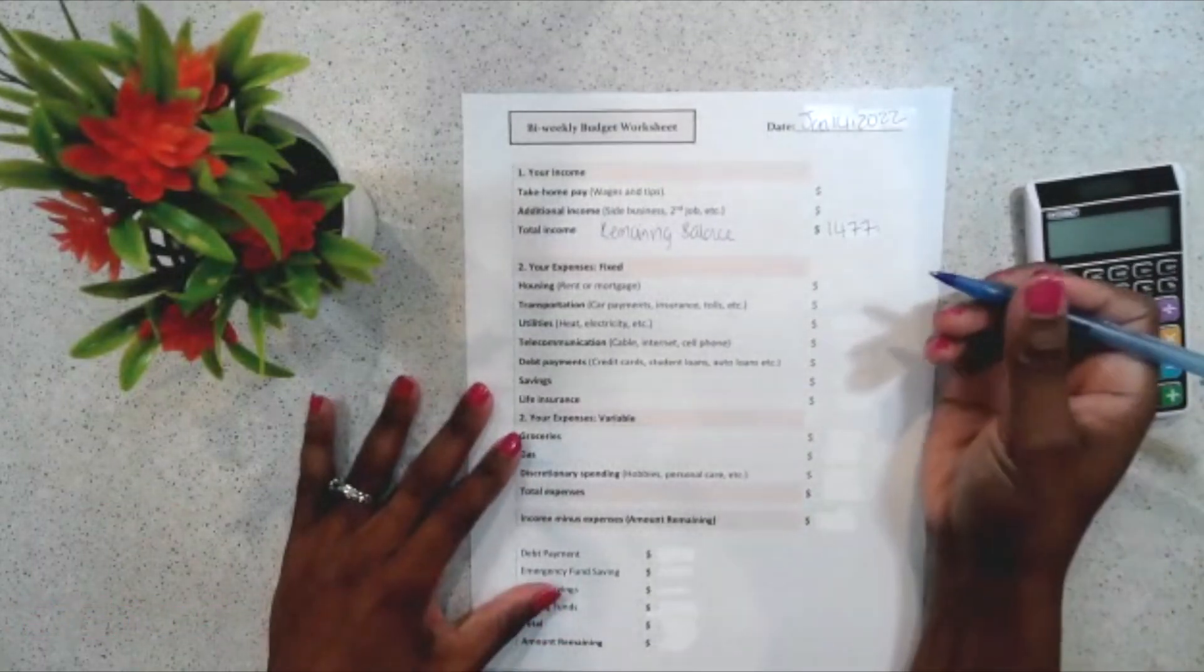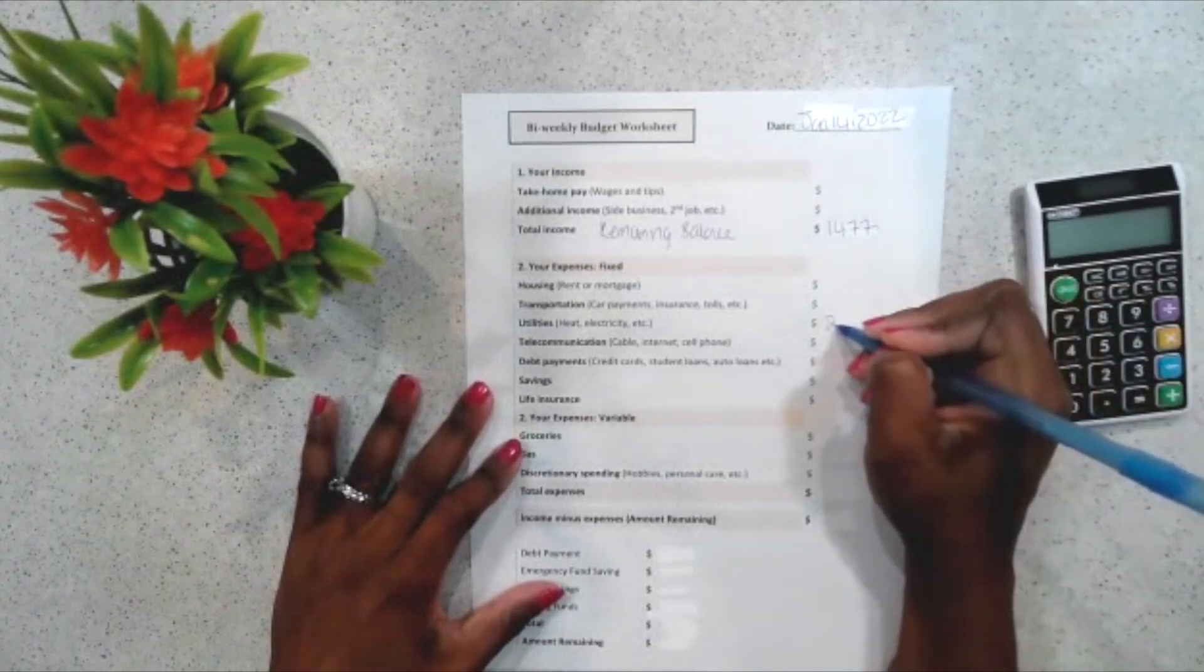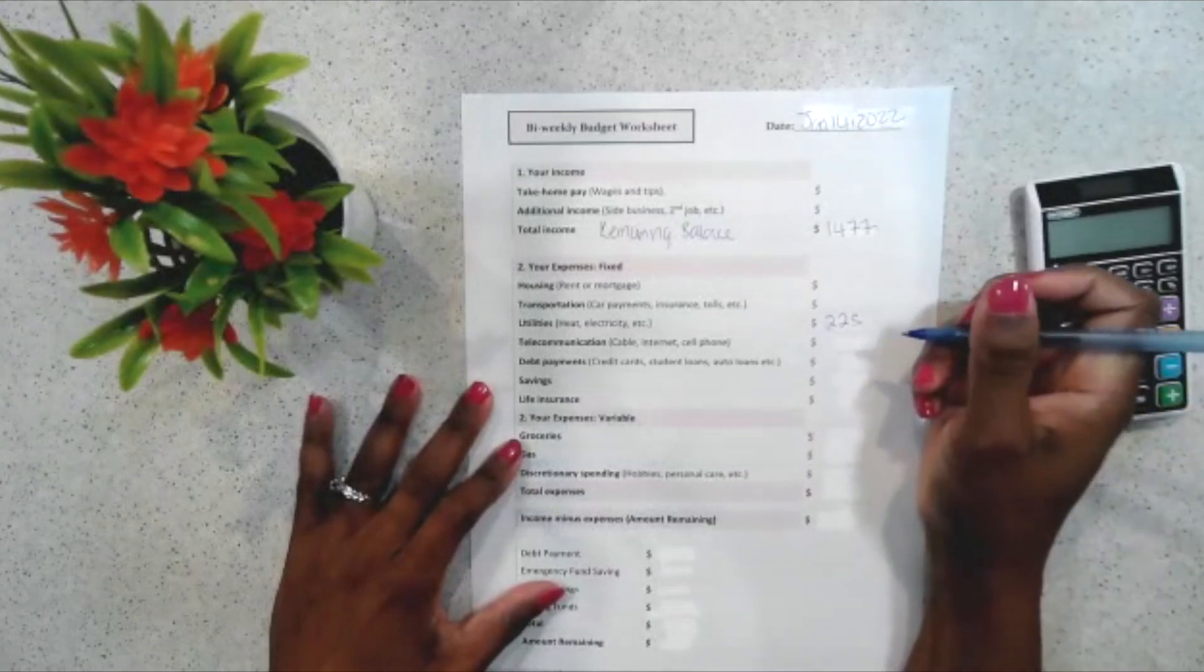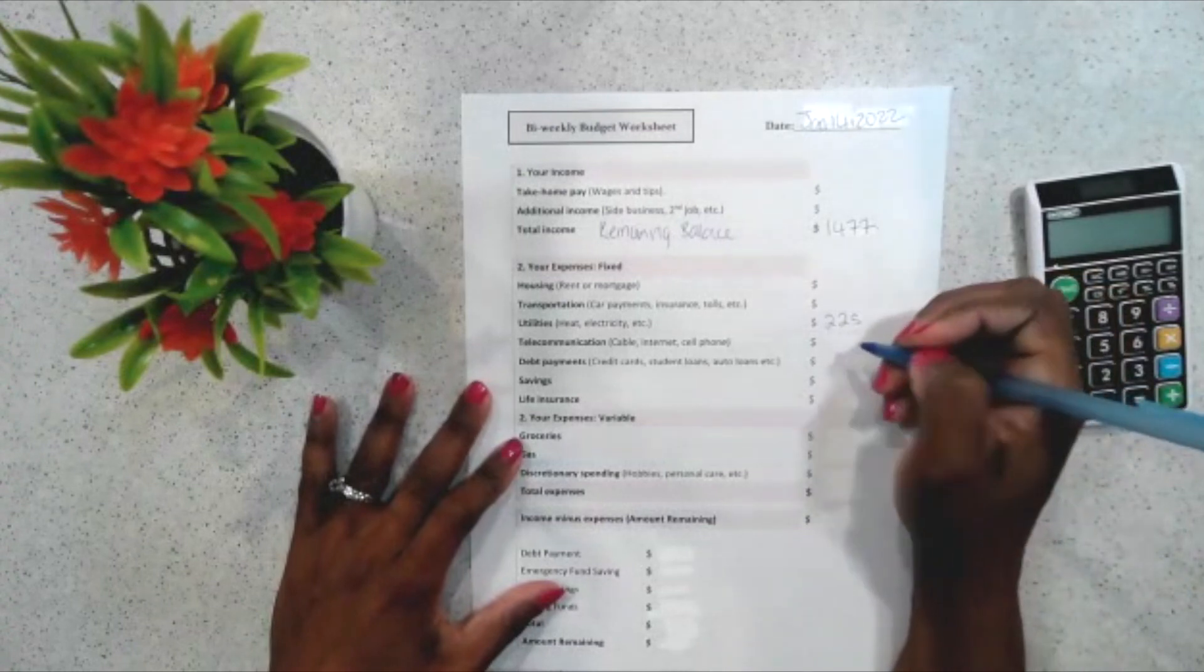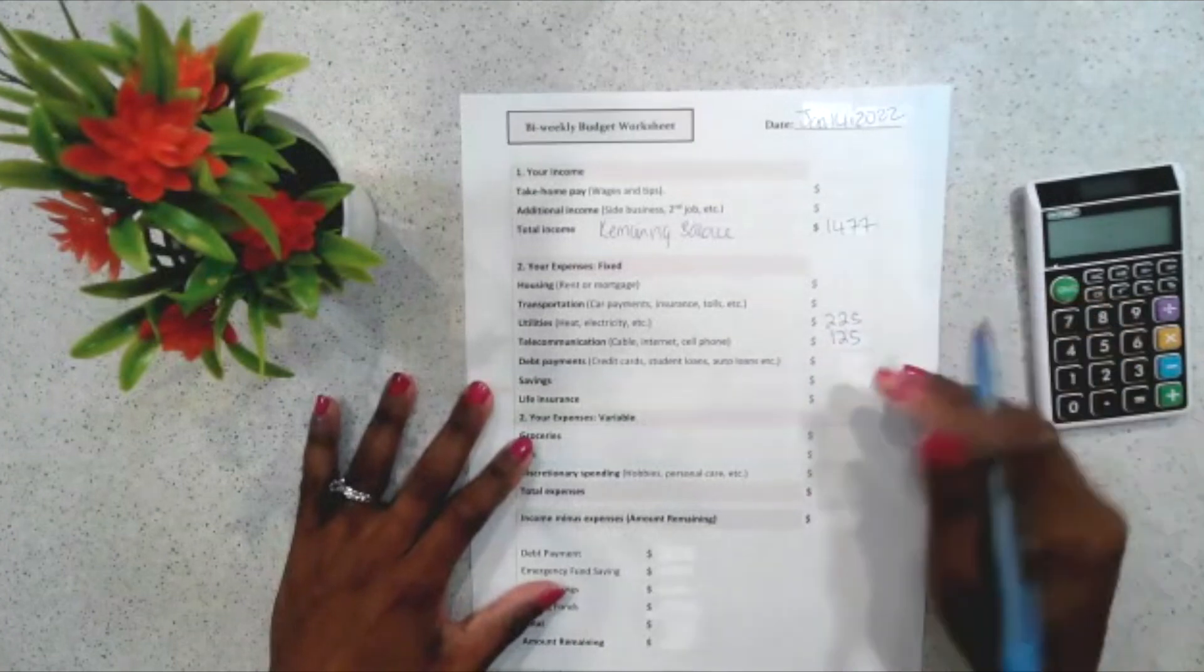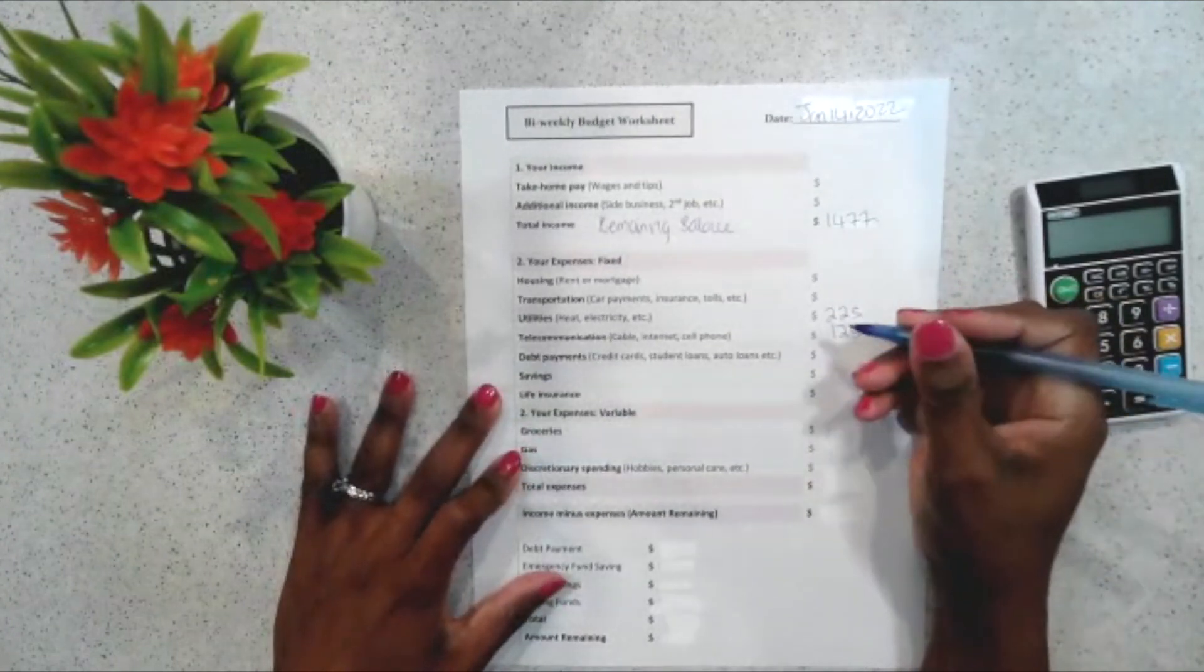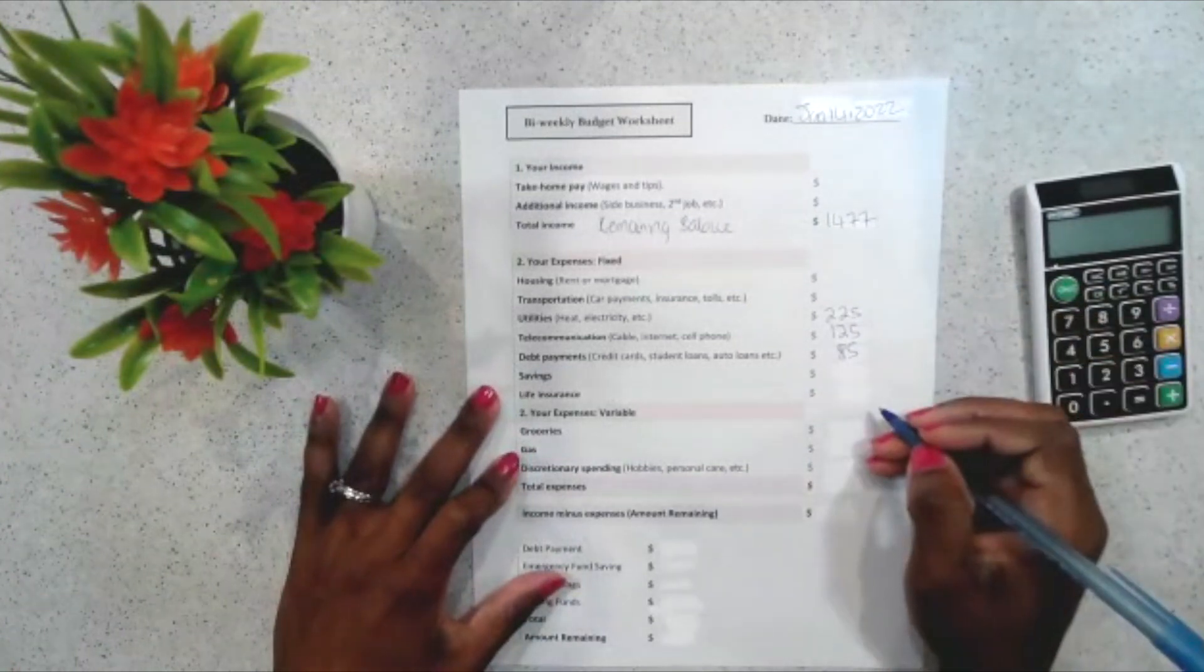And these are the expenses that I carry. So, my first expense is my utilities. I am going to budget $225 for my utilities. Next is my cable, internet, and cell phone. And I just group those. And my budget is $125. My next expense is debt payment, which is my credit card. So, I'll just budget $85 for that one.